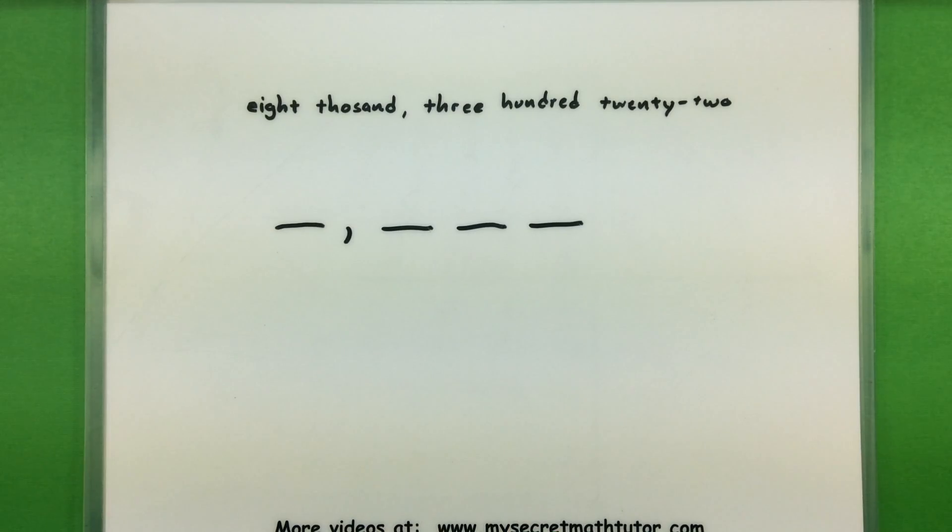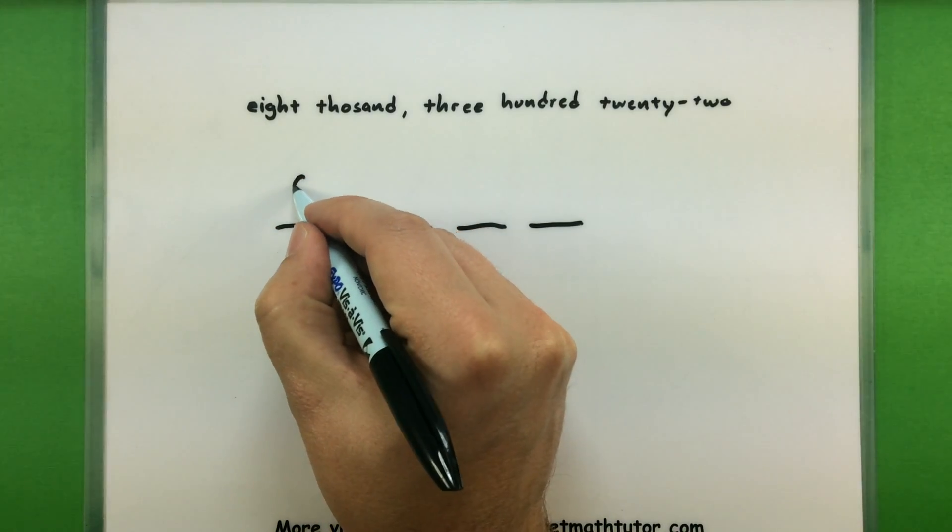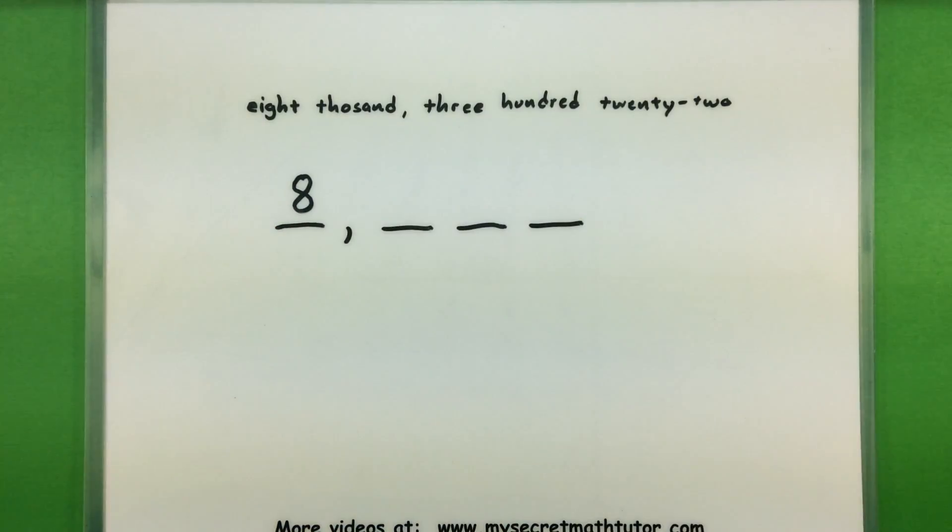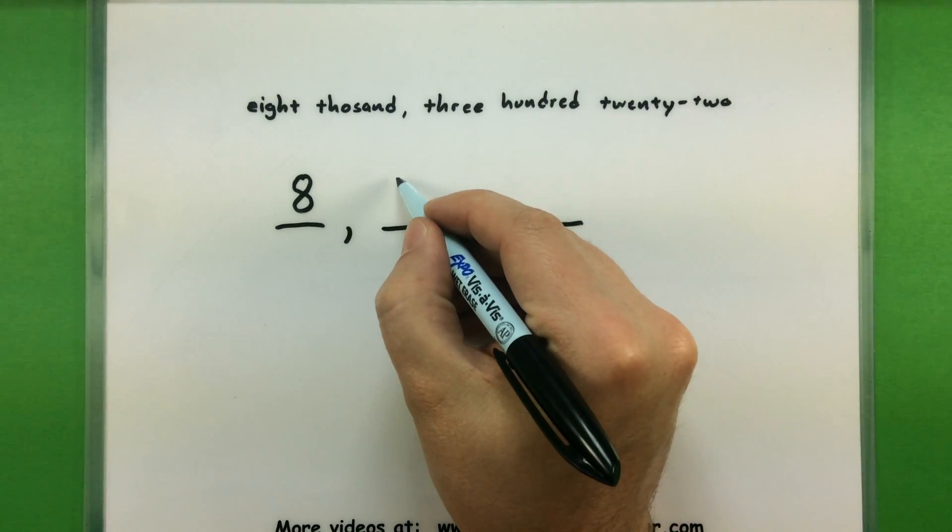So again, thousands is the largest one I have. We'll make sure we have a digit in each of these. 8,000 is the first little part of this, so I will put an eight in the thousands place. Then I have 300, so three is in my hundreds place.